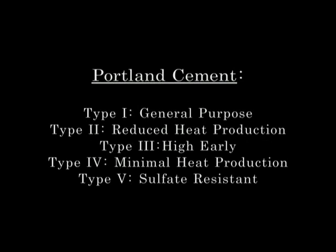There are five different types of Portland cement you can use in your mix. General purpose Type 1 is the most common, especially in residential projects, and if you don't specify anything else this is what you'll get. Type 2 is a reduced heat production, which means it doesn't produce as much heat while curing, so it's good for larger jobs and gives you more time to work the concrete. High early, Type 3, is the opposite — it sets up rapidly and is used when you need to put bearing on the concrete soon after it has cured.